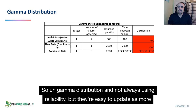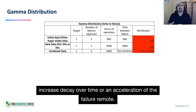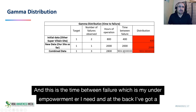Gamma distributions are not always used in reliability, but they're easy to update as more information comes in. We need to make sure that when you're working with gamma distributions, you don't have an increased decay over time or an acceleration of the failure mode. And this is the time between failures, which is the other parameter I need.